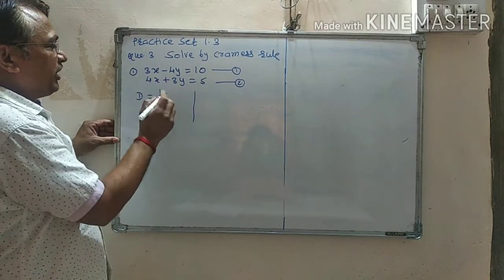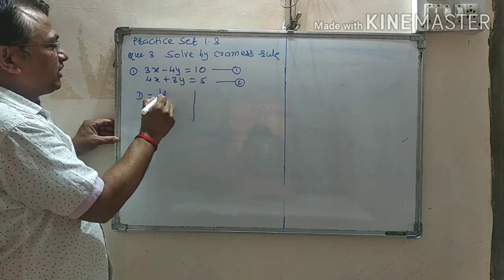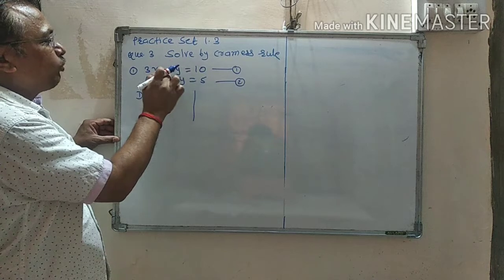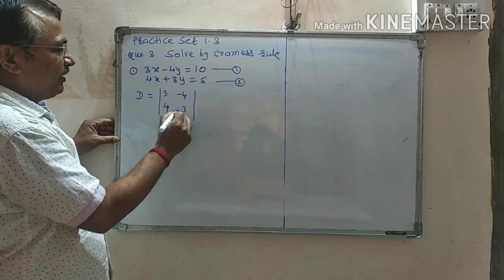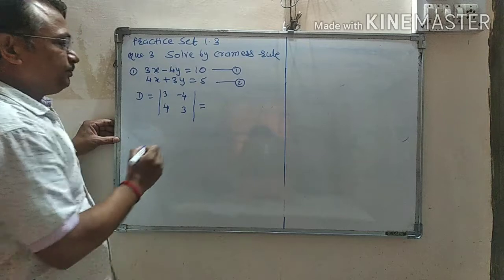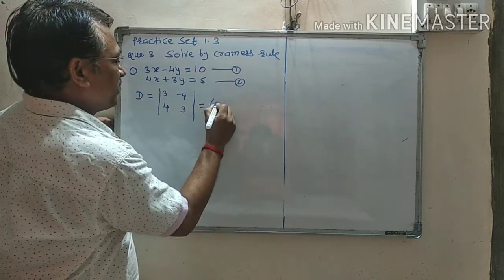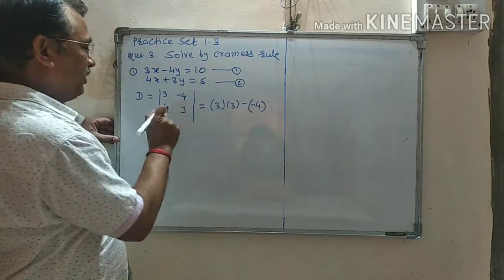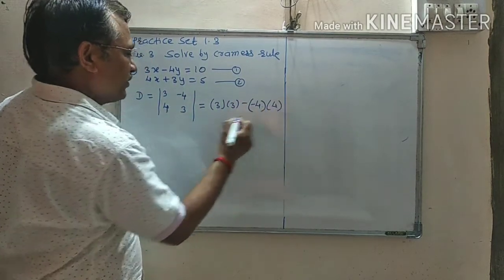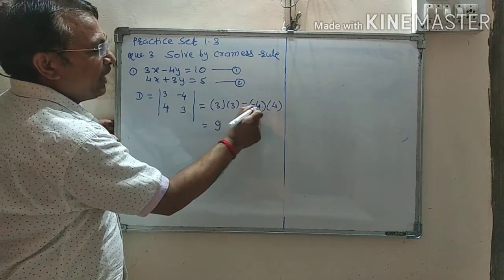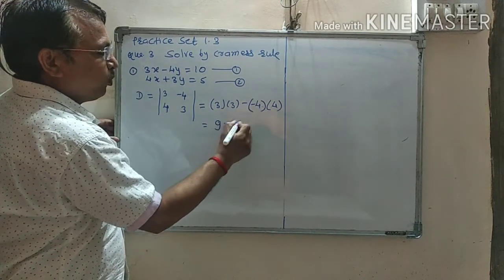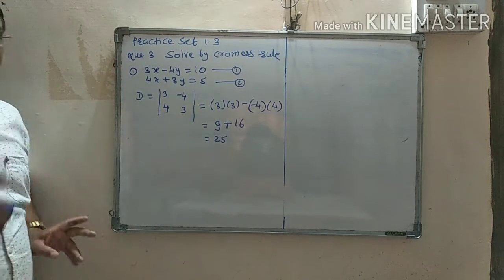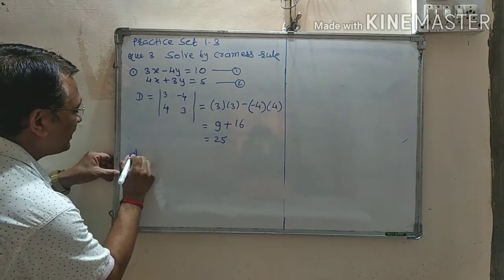D is equal to, we learned: 3 into 3 minus, this minus 4 into 4. 3 times 3 is 9, minus minus becomes plus, 4 times 4 is 16. It is equal to 25. This is D. Now let's see DX.